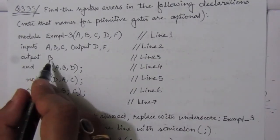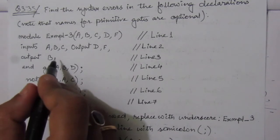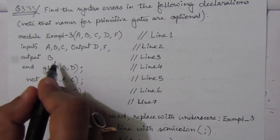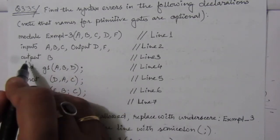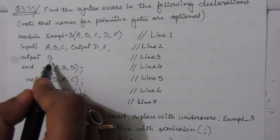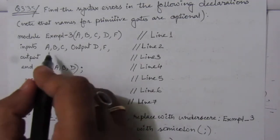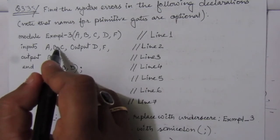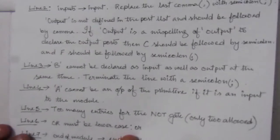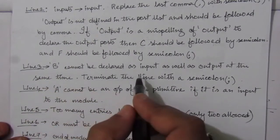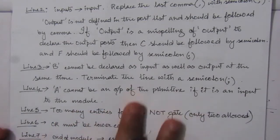In the next line, we have 'output B'. First, we have to put a semicolon to terminate the line. Then we can see that B is defined in the input section and also in the output section — this is not possible. So B cannot be declared as both input and output at the same time.